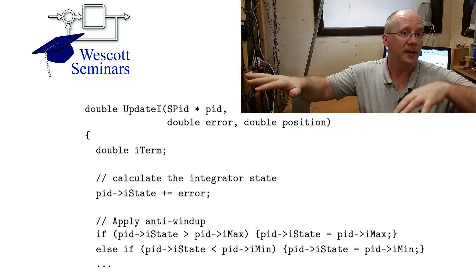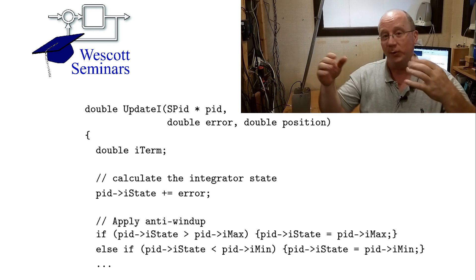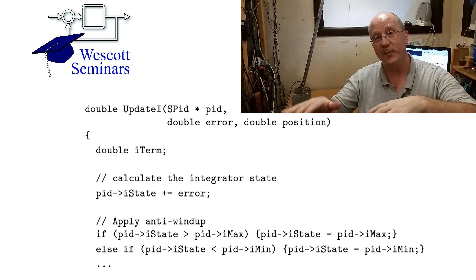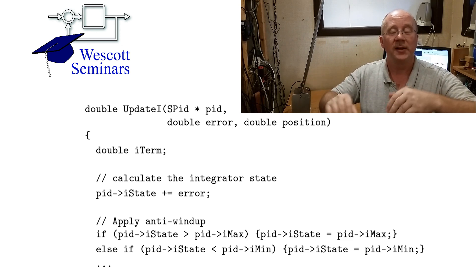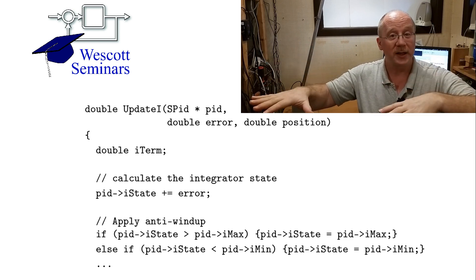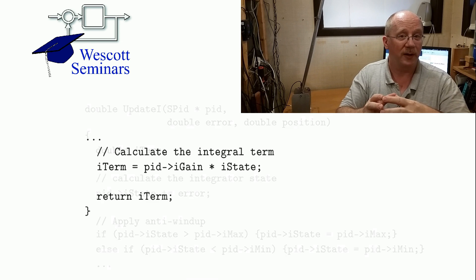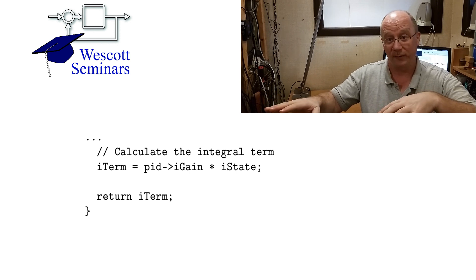Here's the code that implements an integrator control. And you can see here, I'm taking the error in, and I'm adding it into my integrator state, and then I'm doing my anti-windup stuff. And then to put it out the door, I'm just taking that integrator state, and I'm multiplying it by the integrator gain, and out it goes. Now this is pure integral control.